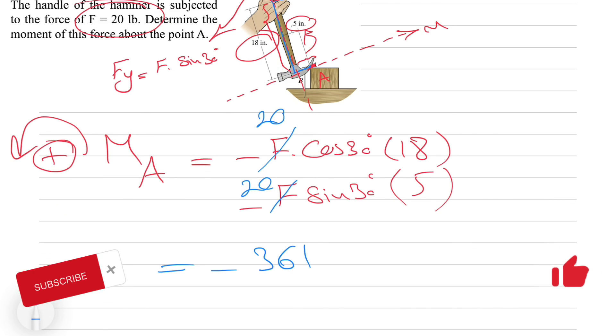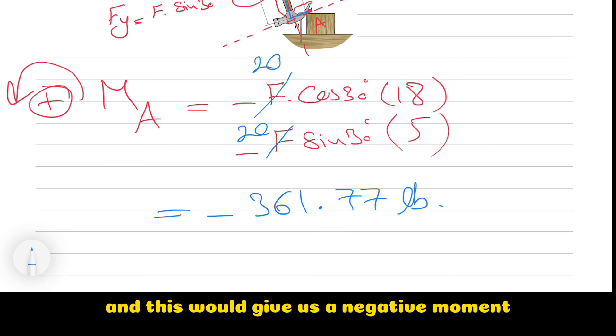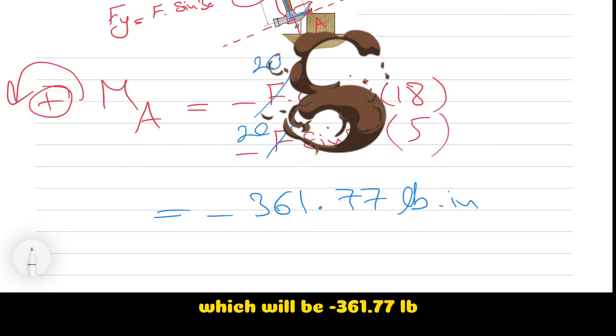So as I was saying, we know F is 20 pounds from the question and this would give us a negative and this will be a positive moment.